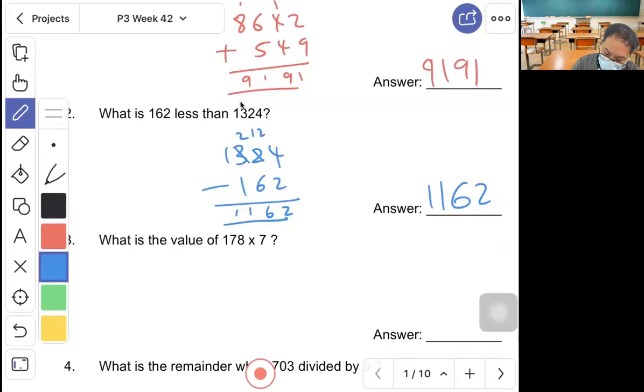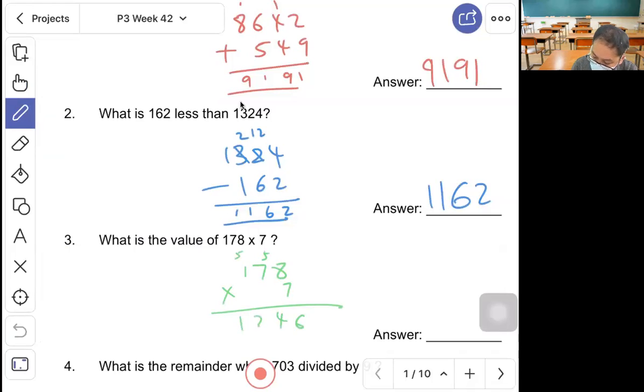Question 3, what is the value of 178 times 7? Let's multiply. 1,246.